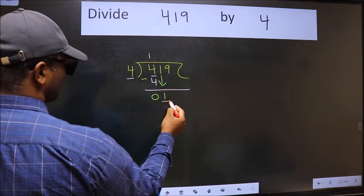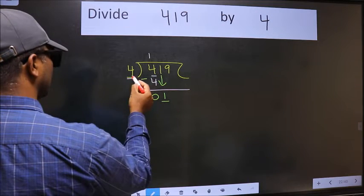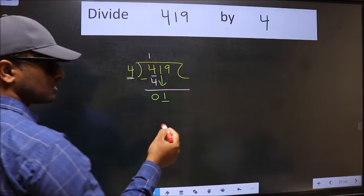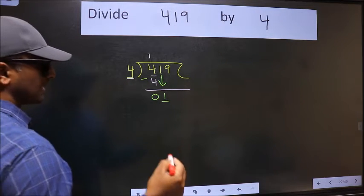So, 1 down. Now, here we have 1 and here 4. 1 is smaller than 4, so we should bring down the second number.